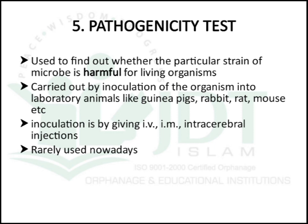The pathogenicity test is used to find out whether a particular strain of microorganism is harmful to living organisms. This is carried out by inoculation of microorganisms into laboratory animals like guinea pigs, rabbits, rats, mice, etc. Inoculation is done by giving IV, IM, or intracardiac injection. However, this method is rarely used now.